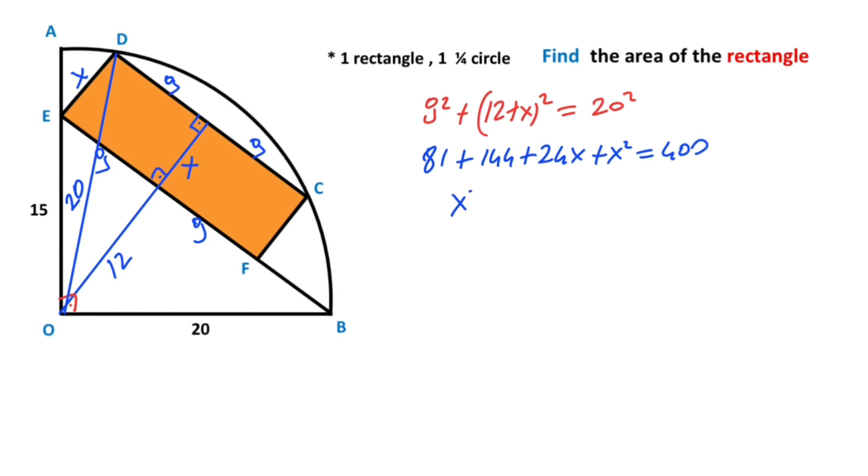144 + 24x + x squared equals 400. If you organize the equation, x squared plus 24x minus 175 equals 0. So we get a quadratic equation.